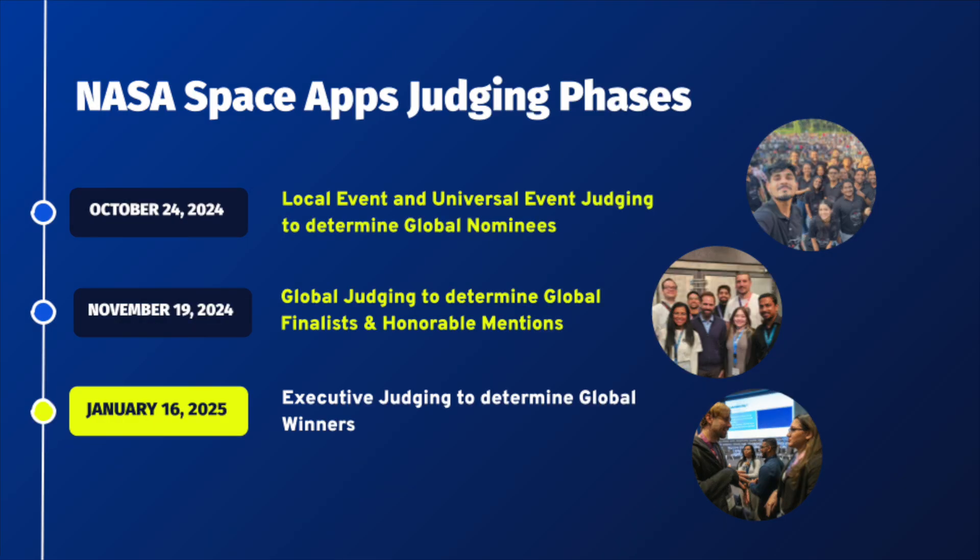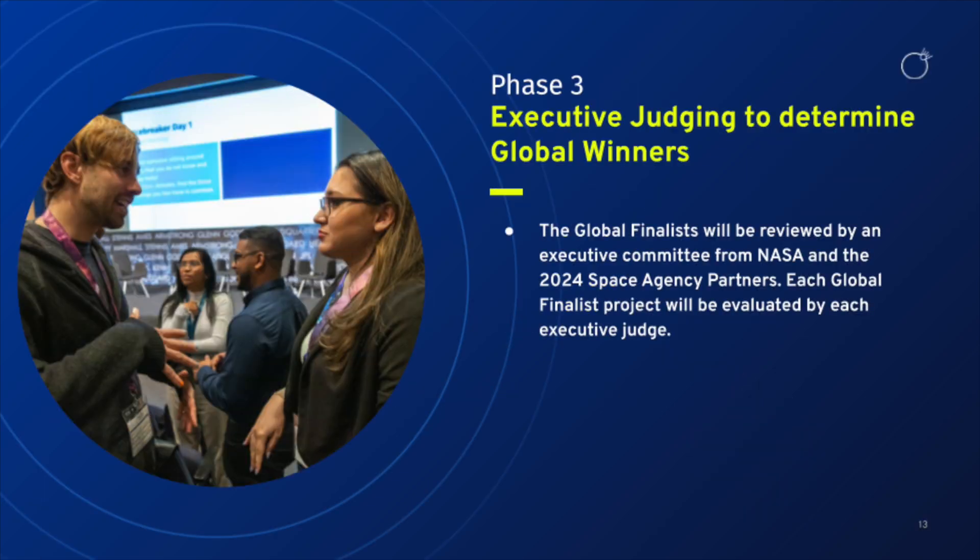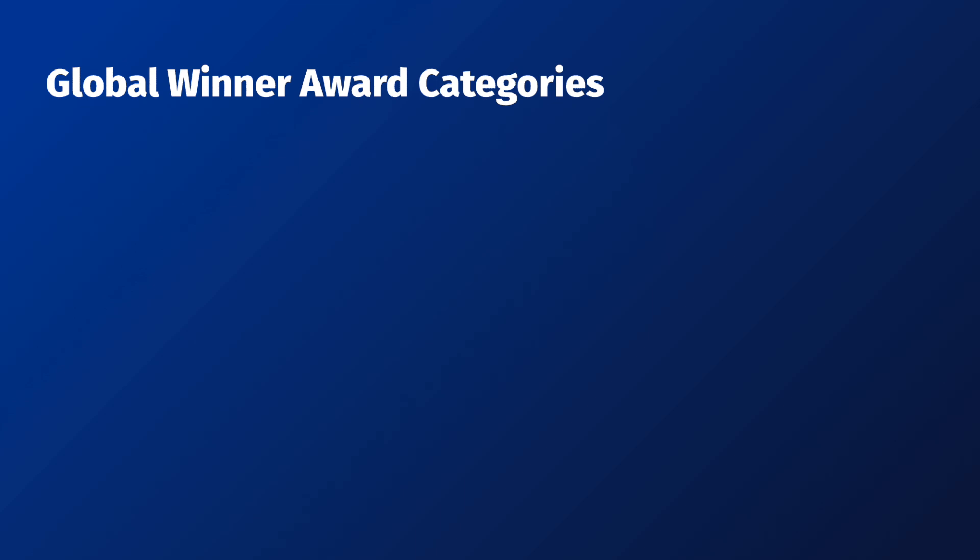Phase three is when we announce the global winners. During executive judging, the global finalists will be reviewed by an executive committee, including individuals from NASA and the 2024 Space Agency Partners. Each global finalist project will be evaluated by each executive judge. The executive committee from the final round of judging will nominate teams for one of 10 global awards.